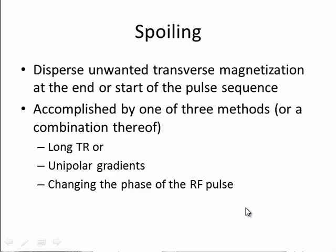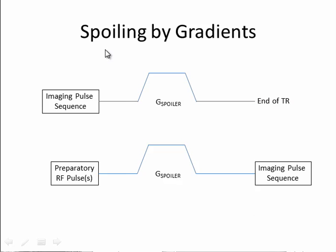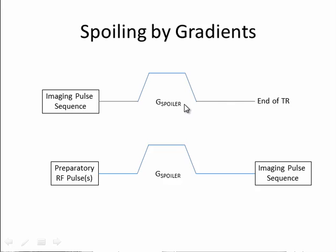Spoiling by gradients is accomplished by inserting a gradient into the sequence either after the pulse sequence has finished and before the next TR, or before the start of the sequence but after preparatory RF pulses. This spoil gradient is typically called a trapezoid if it has this shape, and it can be applied along either the X, Y, or Z direction, or all directions.